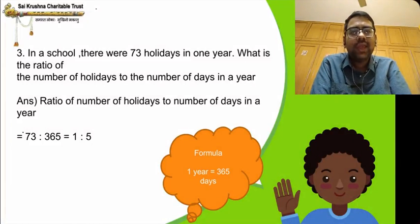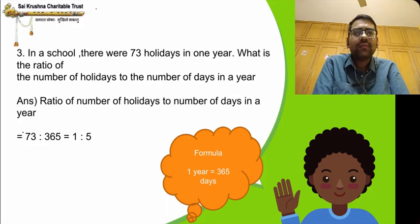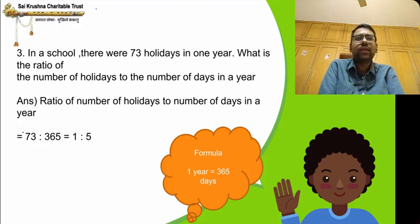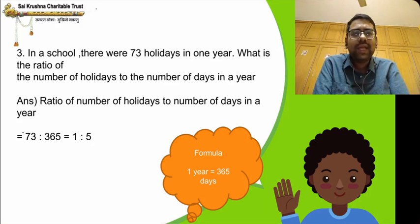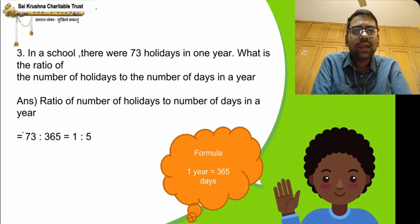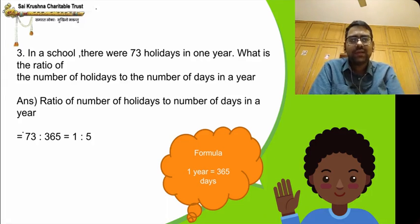In a school, there were 73 holidays in one year. There are 365 days in a year. The ratio of number of holidays to number of days in a year is 73 is to 365, which simplifies to 1 is to 5, because 73 fives are 365.